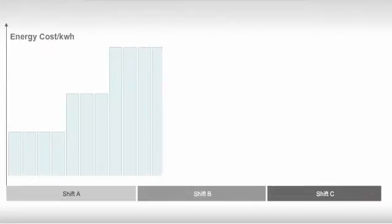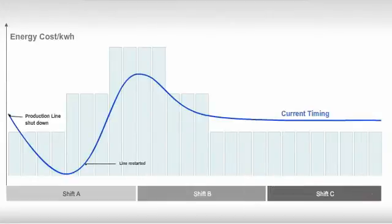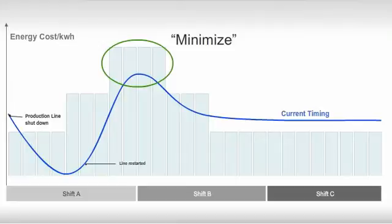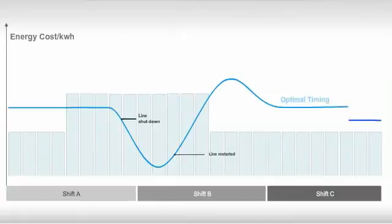A fourth quick way to reduce energy costs is by modifying behavior to shift energy intensive activities or processes to off-peak hours. A common example is the untimely start and shutdown of a production line, spiking utility rates.